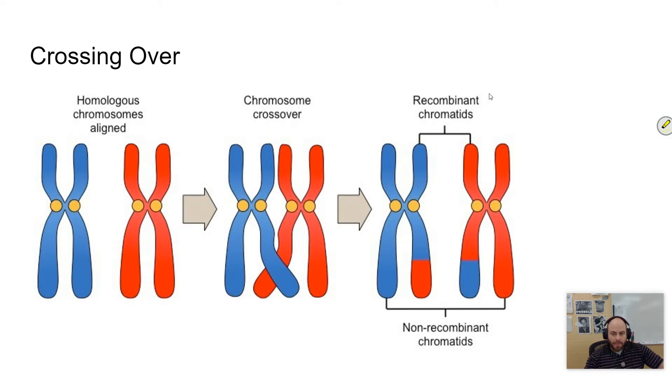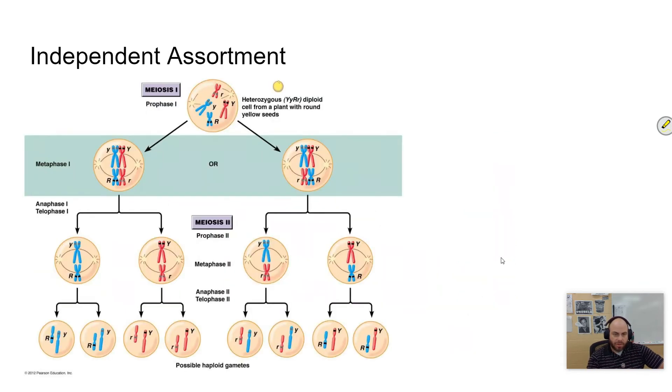Recombinant is just recombination. These are recombinant chromatids because they have been changed through that combination, and these are non-recombinant chromatids because they didn't combine. And so this creates a great genetic diversity.